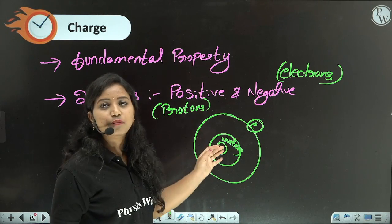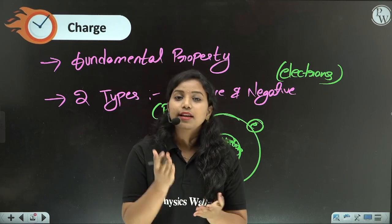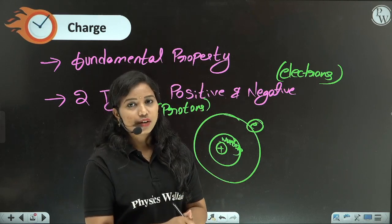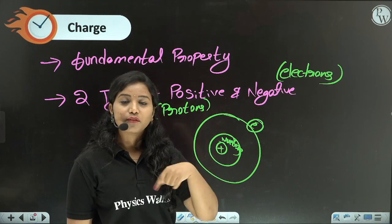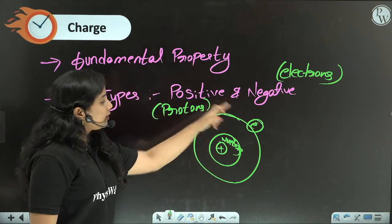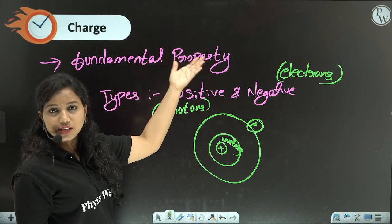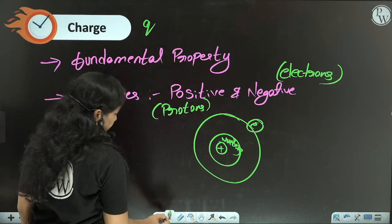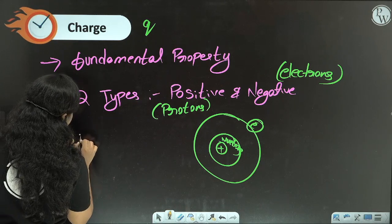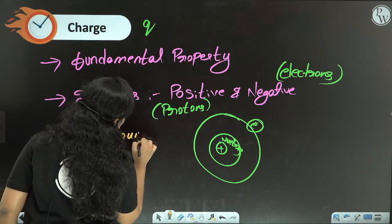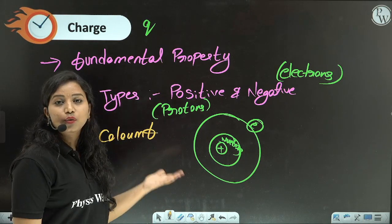Inside the molecule, inside the material — inside the nucleus, protons and neutrons are present. Outside the nucleus, the negative charges called electrons are revolving around it in orbits. This is the structure of an atom. We indicate charge with Q, and the unit of charge is Coulomb.